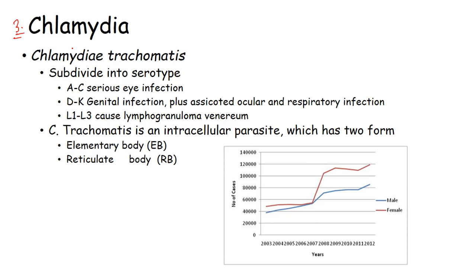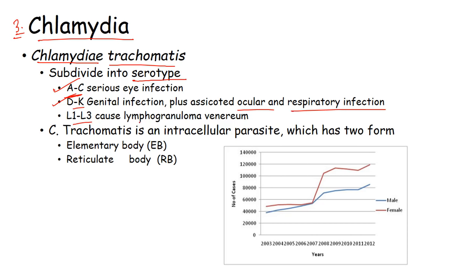The third kind of STD is chlamydia, caused by Chlamydia trachomatis. Different serotypes of Chlamydia trachomatis are present: A to C cause serious eye infections, D to K cause genital infections and are associated with ocular and respiratory infections, and L1 to L3 cause lymphogranuloma infections.